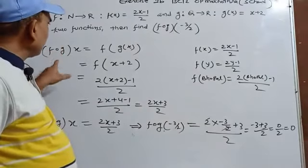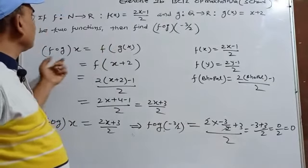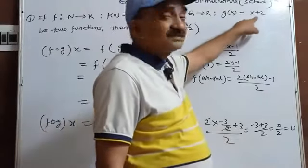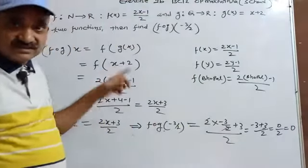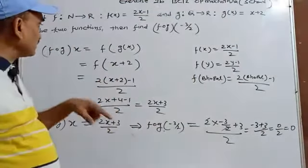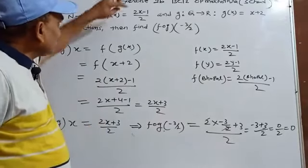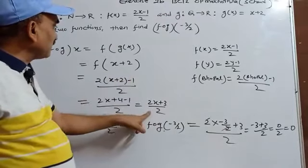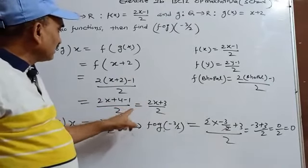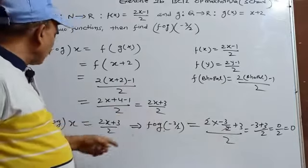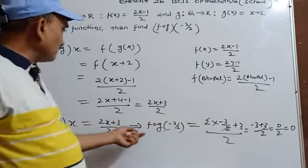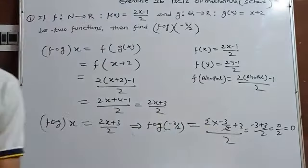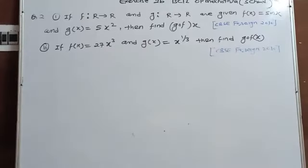To summarize: fog(x) means f(g(x)). We substituted g(x)=x+2 into f, then wherever x appeared in f(x)=(2x-1)/2 we put x+2, simplified to get fog(x)=(2x+3)/2, then substituted x=-3/2 to get the answer 0.